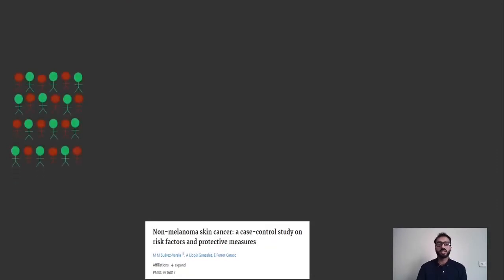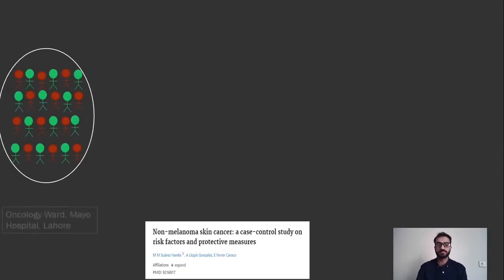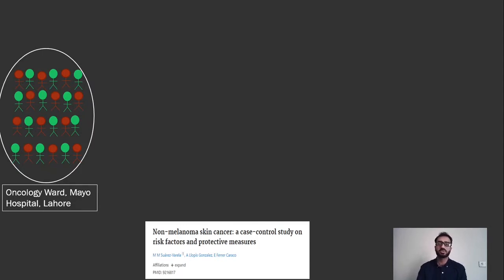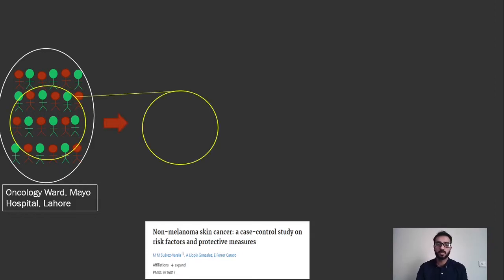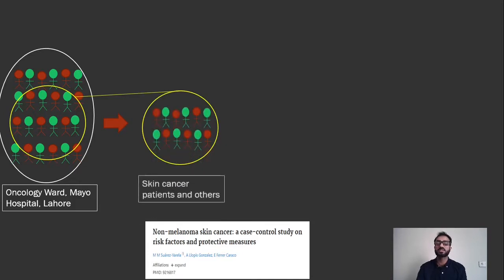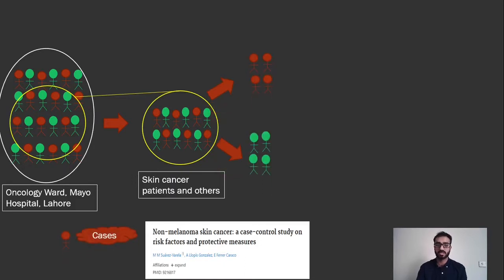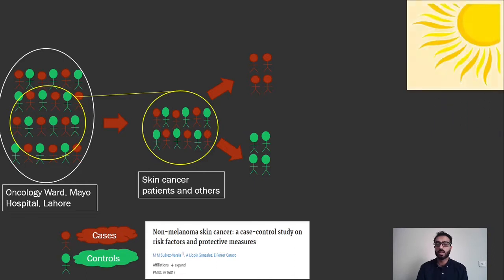Let's imagine a scenario. Let's say we have a population of cancer patients in the oncology ward of Mayo Hospital — a diverse population including thyroid cancer patients, prostate cancer patients, and breast cancer patients. From this population, we take a small sample of only those subjects who have been diagnosed with skin cancer, and those who have not been diagnosed and don't have skin cancer. We want to find out whether excessive exposure to sunlight had any role in the development of cancer in these patients.